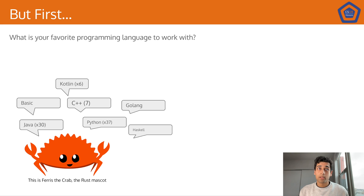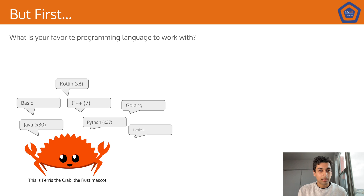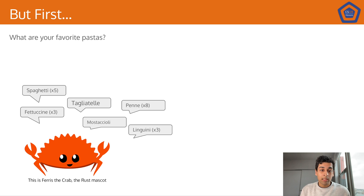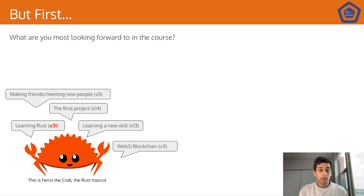Some of your favorite programming languages: Java is still a big winner with 30 of you, Python as well with 37 of you. Looks like Kotlin's making a nice run from CS124 with six of you. Someone's a fan of Basic — interesting to see. Golang, Haskell, and a bunch of others. Favorite pastas: spaghetti, fettuccine, tagliatelle, penne, linguine — and a bunch of pasta sauces. Most popular was marinara, bolognese sauce, and a bunch more. As for what you're looking forward to in the course: meeting new friends, the final project, learning a new skill, some web3 and blockchain. By far the outstanding number — 31 of you said learning Rust, which I'm happy to see.